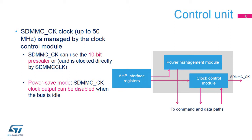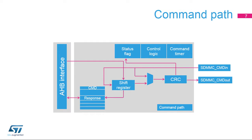The clock control module provides a 10-bit pre-scaler for SDMMC-CK clock generation, which allows it to generate a clock ranging from SDMMC-CLK down to SDMMC-CLK divided by 2046. DDR memory devices are not supported in divide-by-one mode. The control unit can disable SDMMC-CK generation when the bus is idle. The command path circuit is used to program a command response sequence. When enabled, the command path shifts out the command index and argument on the SDMMC-CMD pin.